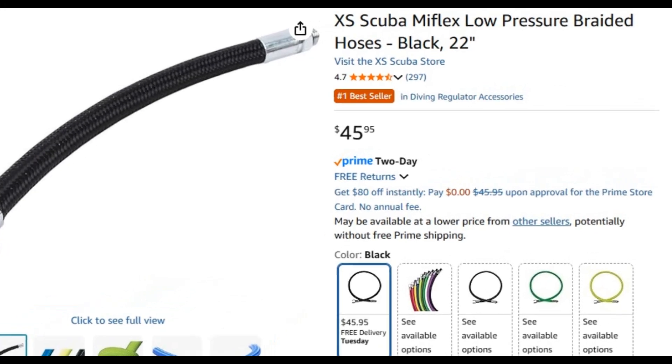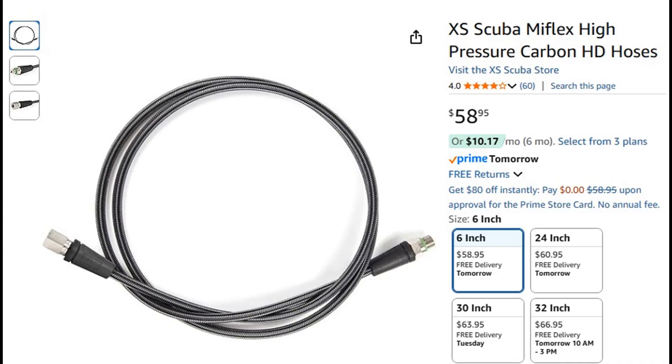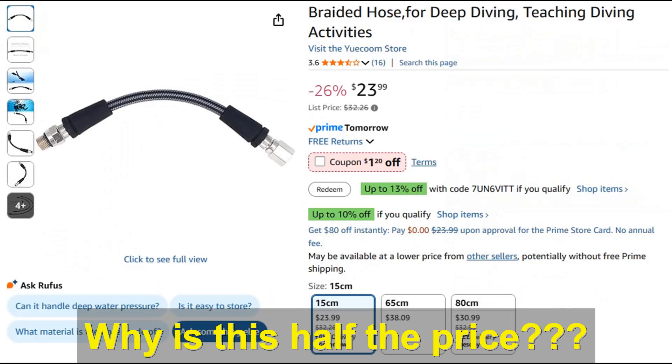Braided hoses are often referred to as Miflex hoses. This is the same analogous situation as tissues being referred to as Kleenex. This is because Miflex was one of the pioneers in the braided hose market, although there are currently a number of other manufacturers.